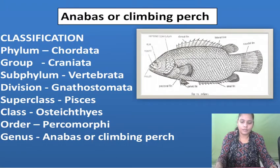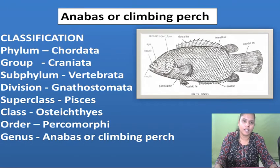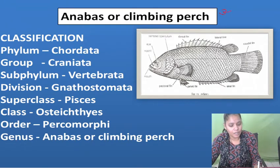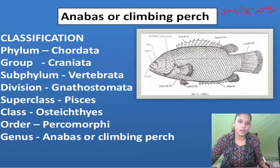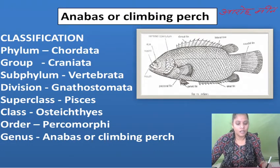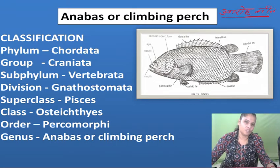Hello everyone. Next we are going to talk about Anabas and what is commonly called climbing perch. In Anabas, we have known about 4 fish: first Labyrinthodita, then Anguilla, then Axocytus, then Clarius. Now we are going to talk about Anabas and climbing perch.